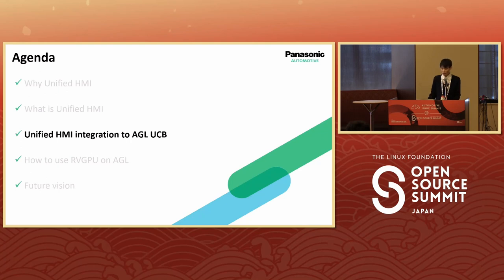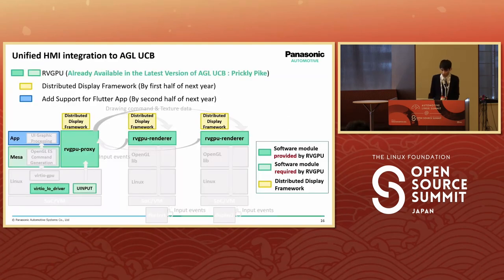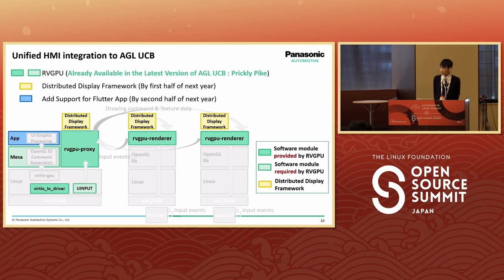In September we integrated RBGPU, shown in the green box, which is already available in the latest version of AGL UCB. The specific usage of integrated RBGPU on AGL will be introduced in the next section. In the future plan, the distributed display framework shown in the yellow box will be committed in the first half of next year. The application support, currently only available for Qt applications, will be available for AGL Flutter applications by the second half of next year. We will continue making contributions to bring more advanced features of Unified HMI to AGL UCB.